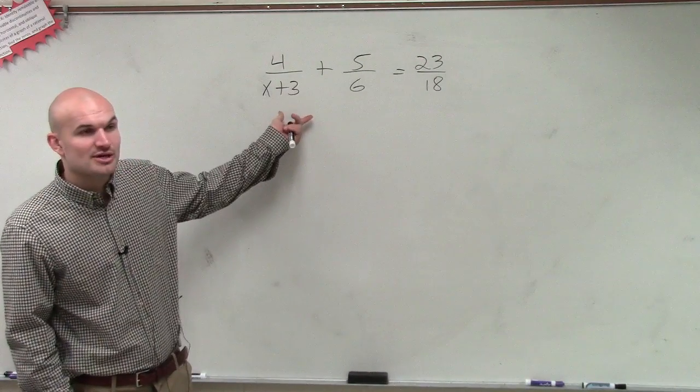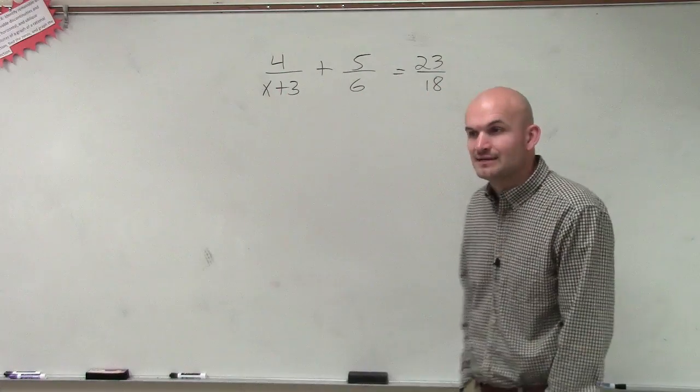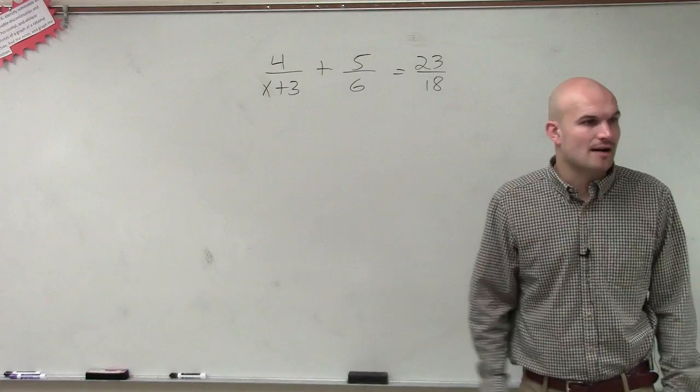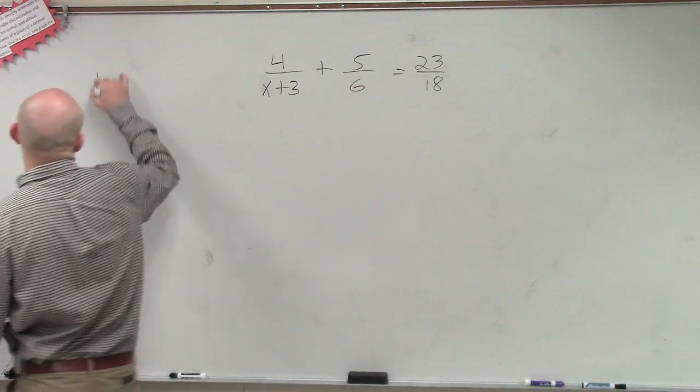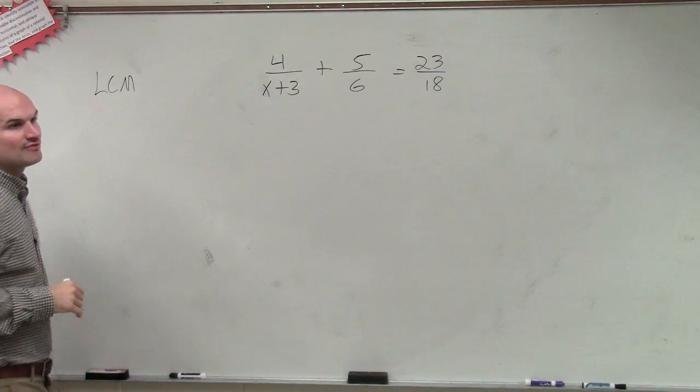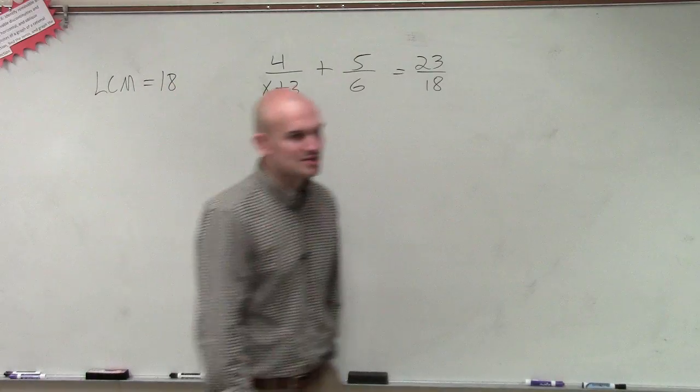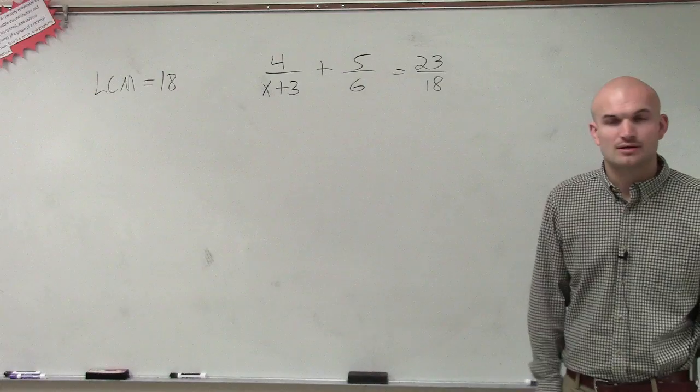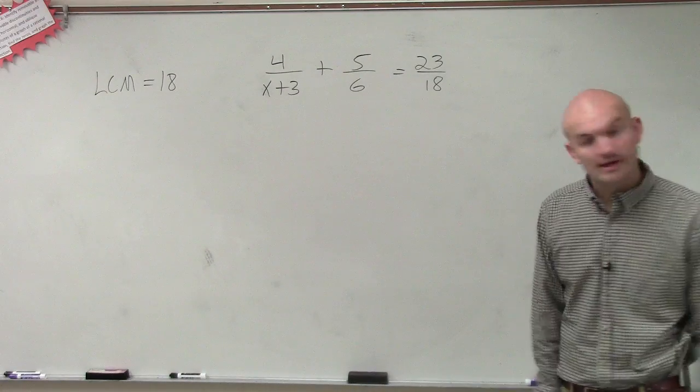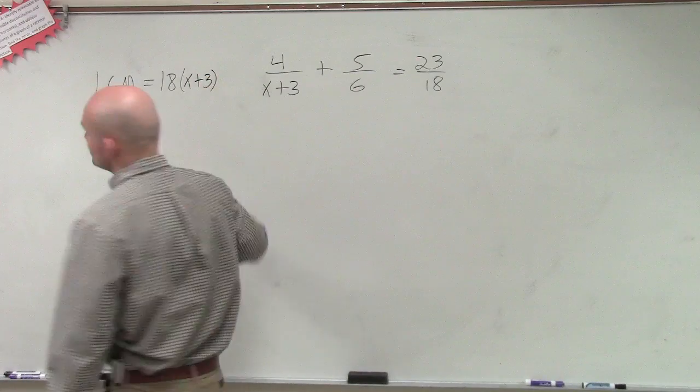So, right now, we have an expression in binomial x plus 3. And we have 6 and 18. Now, between our numbers, what is our least common multiple between our numbers? 18. 18, right? So, let's just write this down. Because if you guys don't write it down, you're going to forget it or get it confused with maybe another problem. So, our LCM is going to be 18. And then, what else? What else do we have there? X plus 3. X plus 3, right? Exactly. So, our LCM is going to be 18 times x plus 3.